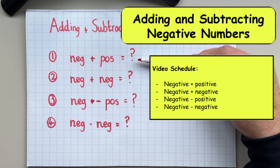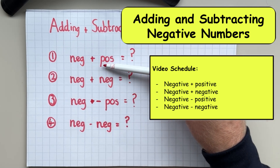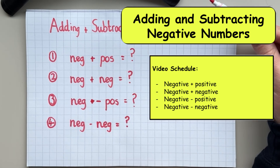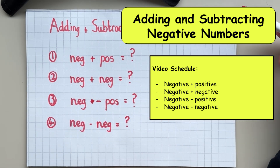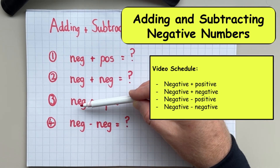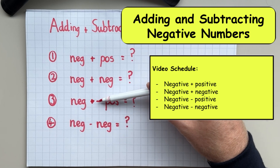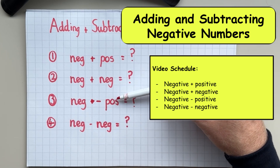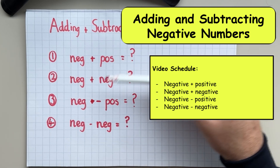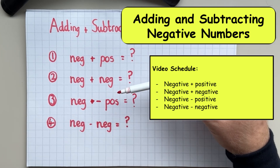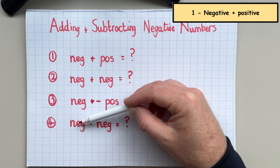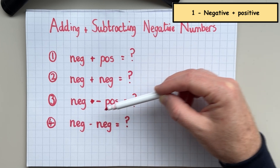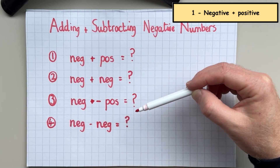The first part we're going to be adding a negative number and a positive number. Then we're going to add two negative numbers together. Then we're going to have a negative number taking away a positive number. And then finally we're going to finish with the bit that everybody always gets wrong and gets confused with — it's when you have a negative number and you take away a negative number.